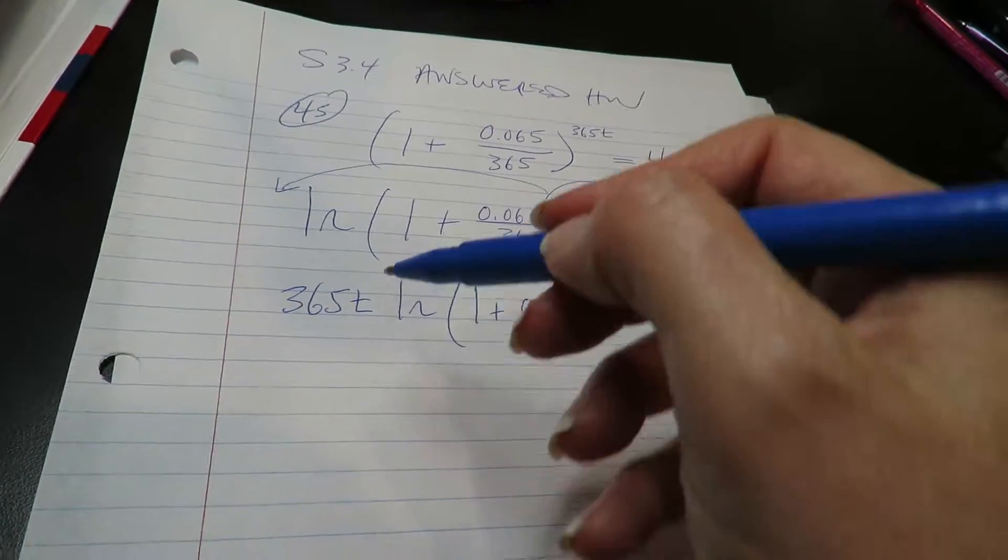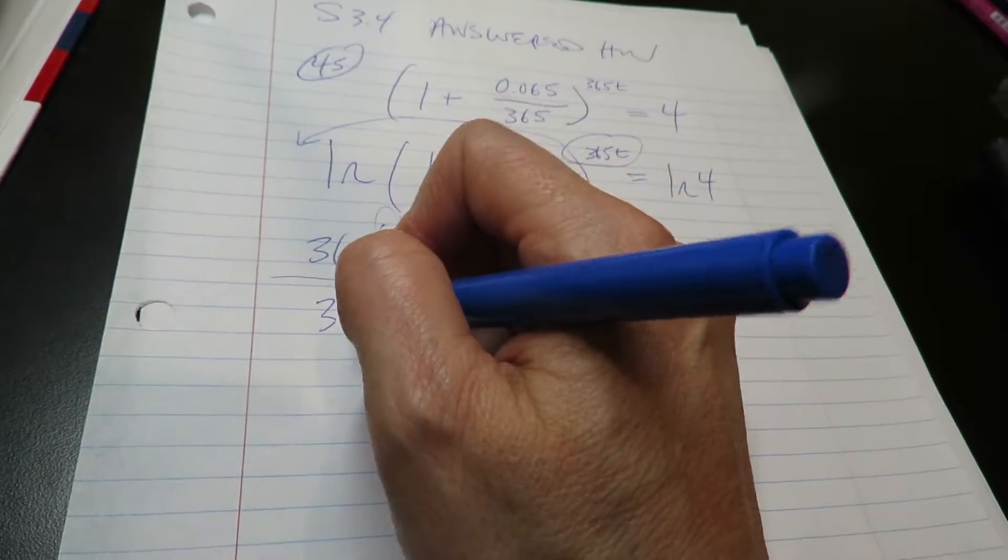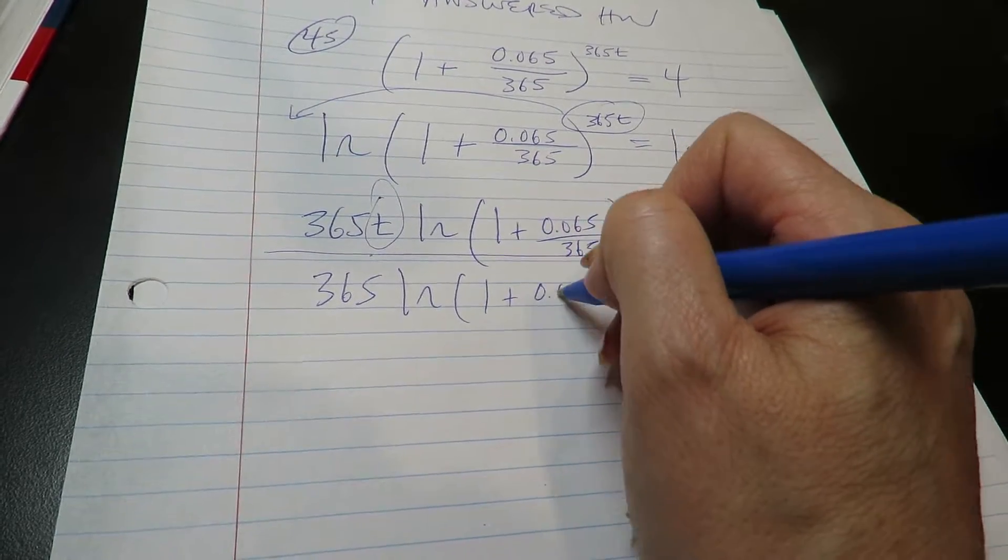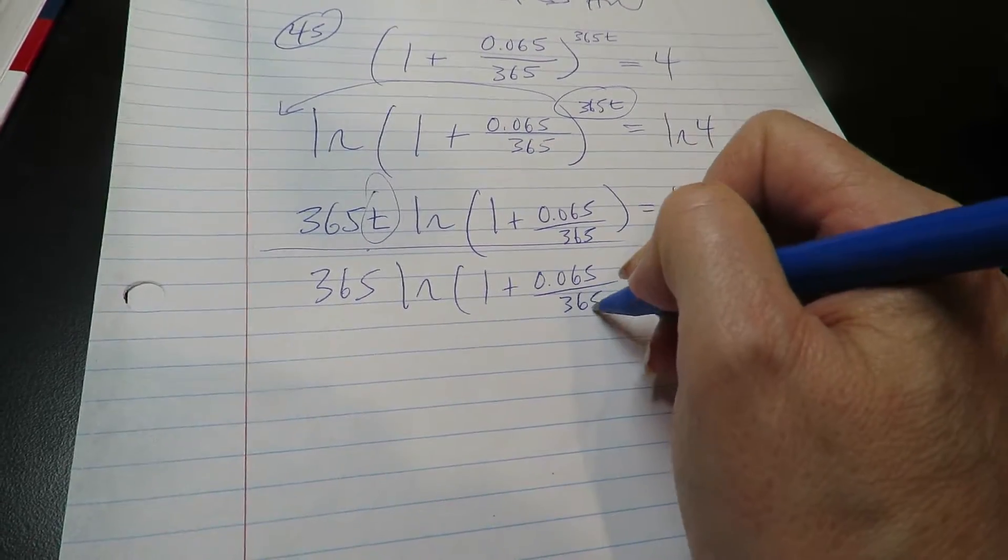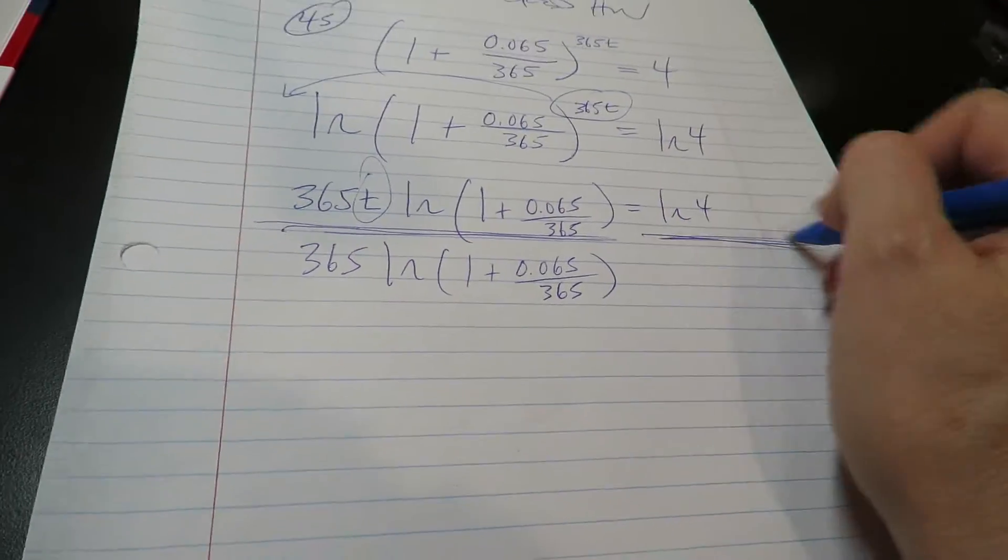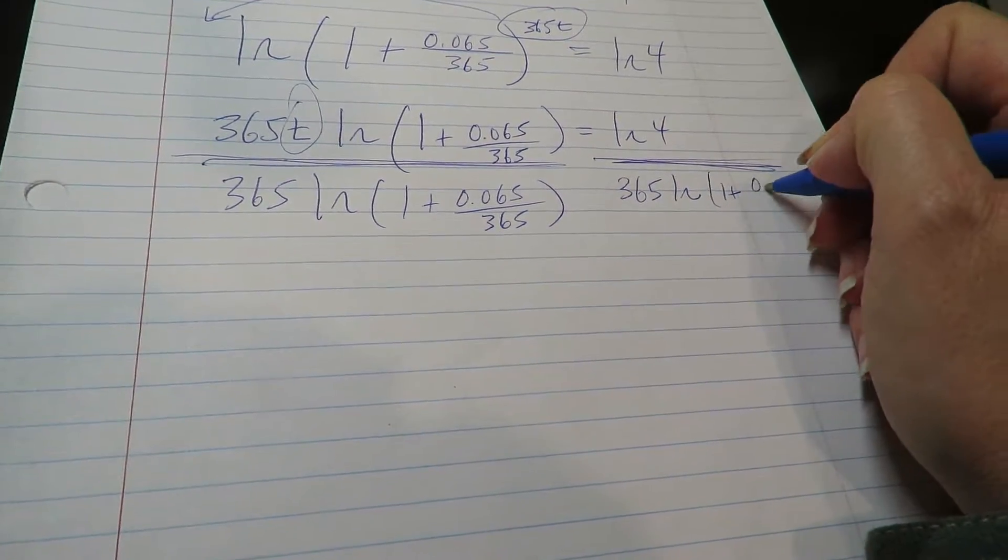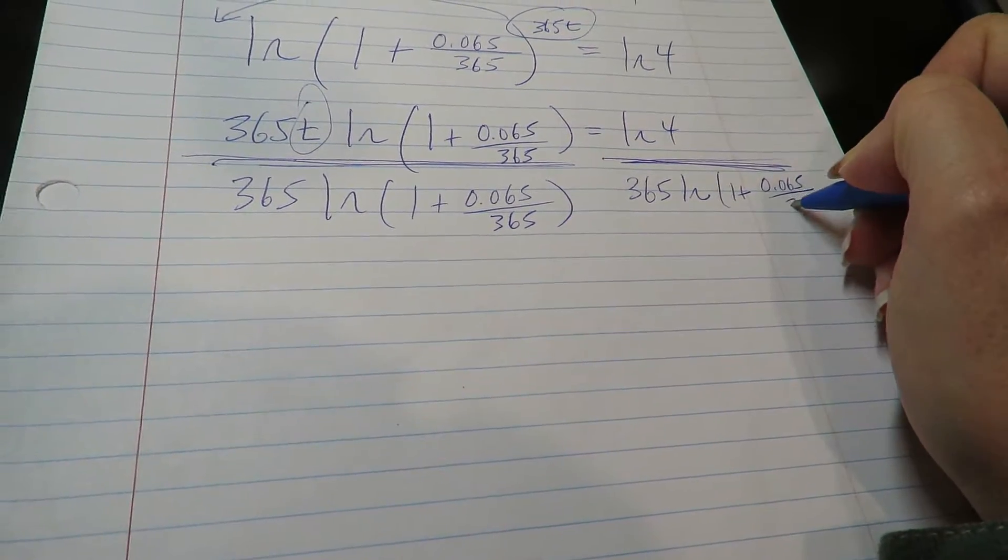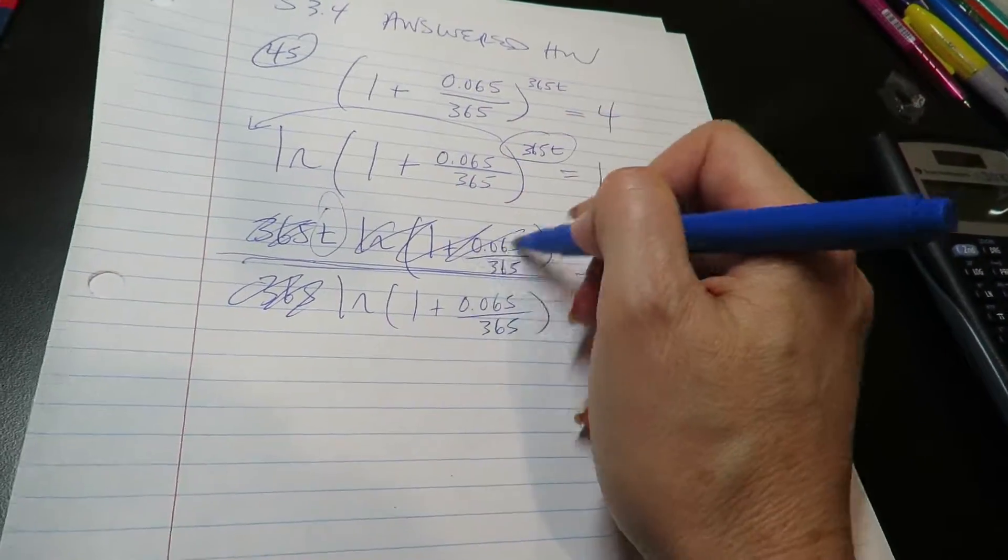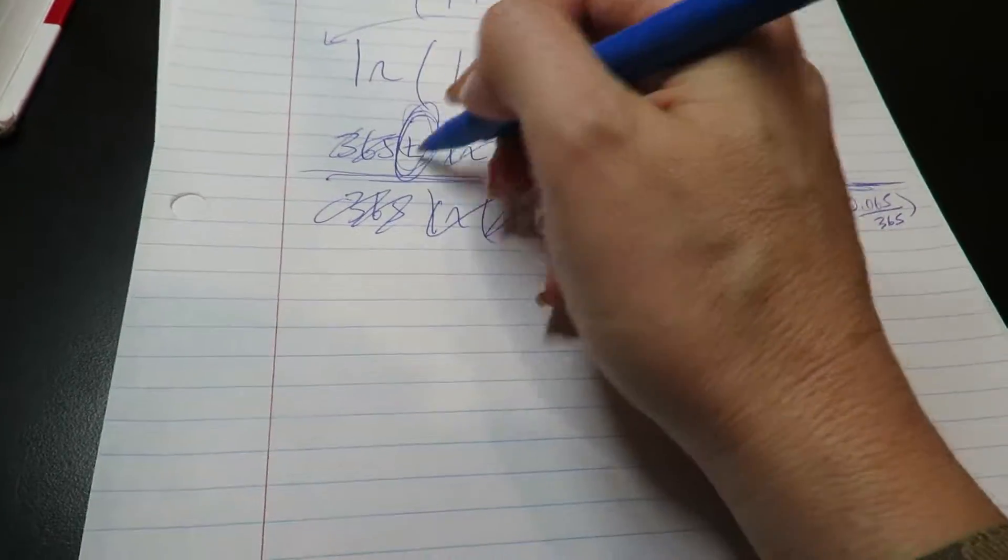Now remember, what you're trying to isolate is this T over here. So you have to get rid of everything else. You have to get rid of the 365 and you have to get rid of this big LN over here. So you're dividing off all of this to both sides. This gets rid of this stuff over here so that you're just left with your T.